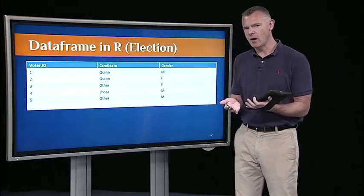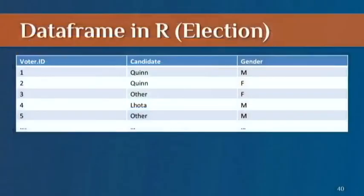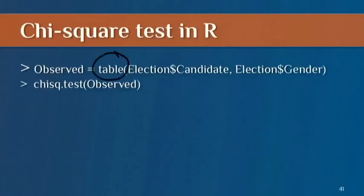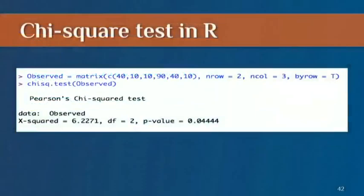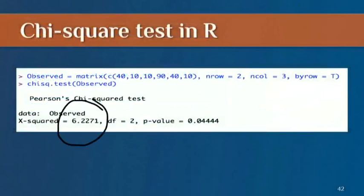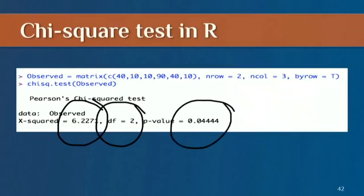Let's look at how we would do this in R. Your data frame would look something like this, where you have the information for each voter represented on a row. We use the table function in R with our election data frame, create a table of candidate by gender, and then run the chi-square test function on the observed values. I did that in R just to check my work, and I got a chi-square value of 6.2271, degrees of freedom 2, and a p-value of .04 — statistically significant, matching the results we got by hand.